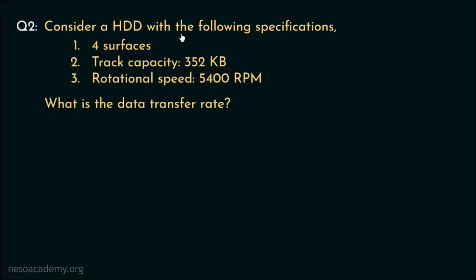Consider a hard disk drive with the following specifications. So the hard disk has got 4 surfaces, the track capacity is mentioned as 352 KB and the disk has the rotational speed of 5400 RPM. Now we are being asked, what is the data transfer rate? Let's solve it now.